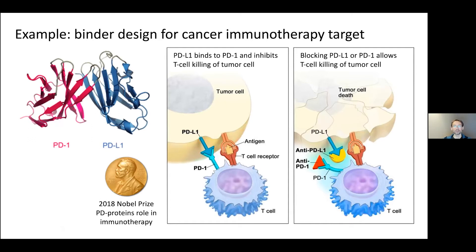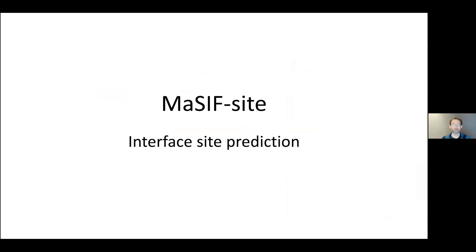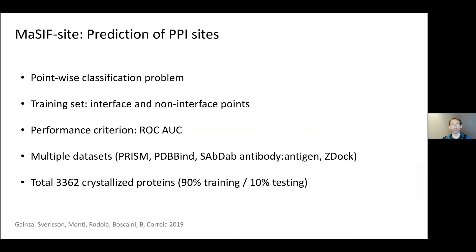An example application is cancer immunotherapy, which typically uses the PD-1/PDL-1 complex. The goal is to block one of these proteins to allow the immune system to kill malignant cells. The problem is that these proteins are very flat — so-called 'undruggable' — making it difficult to design a small molecule to block them. But you can design another protein, a biological drug, to target them. We use our system's components to identify the likely binding site and then build a protein that binds there.